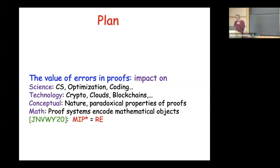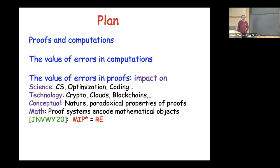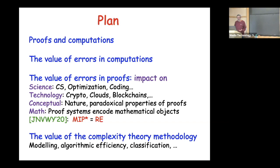I was prompted to give this talk by seeing the result that many people ask me about: MIP* = RE. I'll explain everything. The right-hand side is on the first slide and the left-hand side is on the last slide. It's basically a quantum type of proof. But I thought if I have to tell you about errors in proofs, I should first tell you about errors in computation, and before that, about proofs and computation without errors.